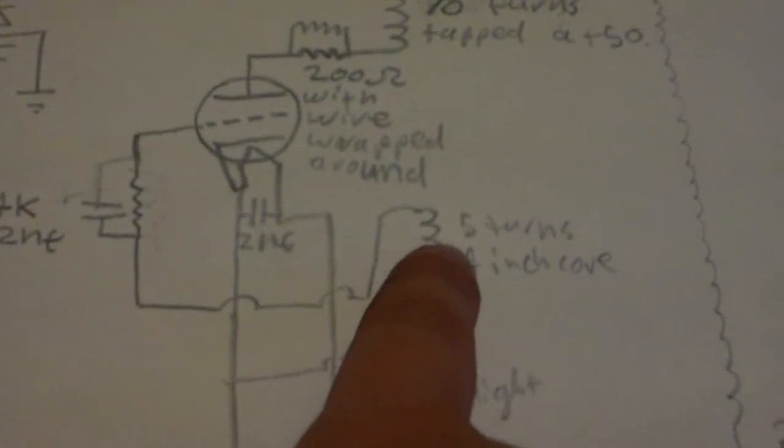That goes over to the feedback coil, which is 5 turns on a 4-inch core. In series with that is a couple of light bulbs; doesn't really matter what they are.